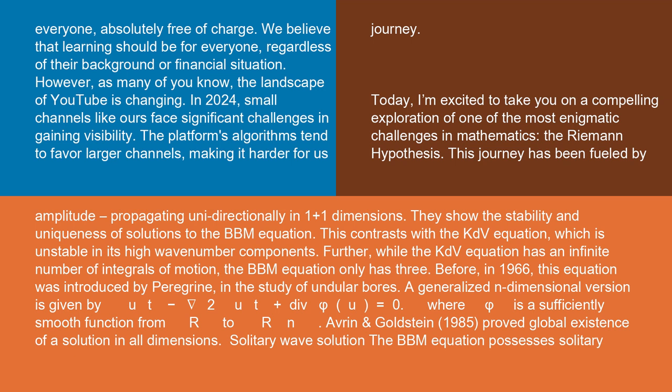A generalized n-dimensional version is given by u_t - ∇²u_t + div φ(u) = 0, where φ is a sufficiently smooth function from R to R^n. Averin and Goldstein (1985) proved global existence of a solution in all dimensions.